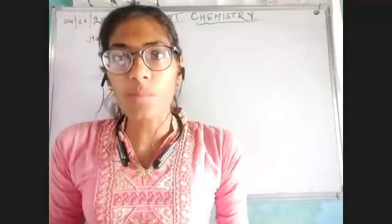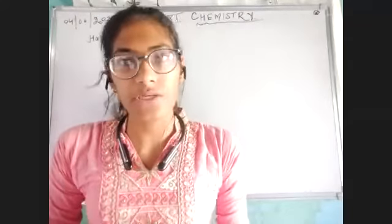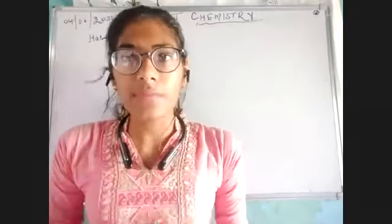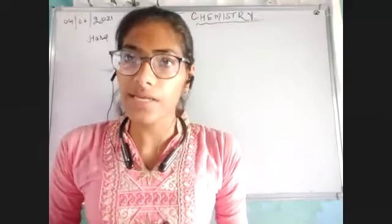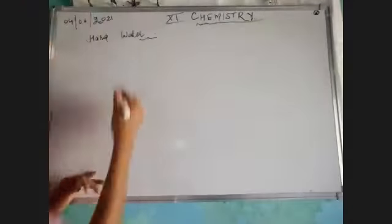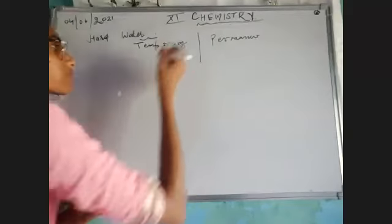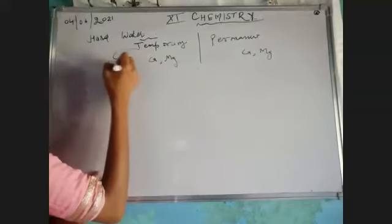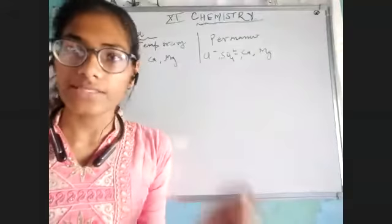We studied that if there is normal water, it is soft water, but if there are some impurities due to calcium and magnesium compounds or their ions, they will make our water hard. We understood this already. We also came to know that hardness is of two types: one is temporary hardness and the second is permanent hardness. The only difference is that in temporary hardness there are bicarbonate ions, whereas in permanent hardness there are chloride and sulfate ions.